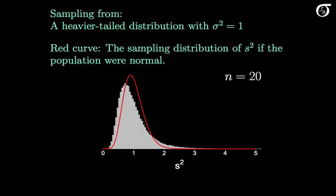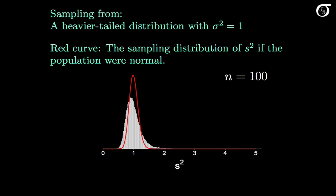If we increase the sample size to 100, we see that the sampling distribution of s squared is looking a little more normal, but there is still some skewness, and it is definitely more variable than when sampling from a normally distributed population.